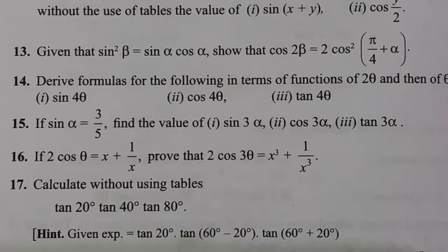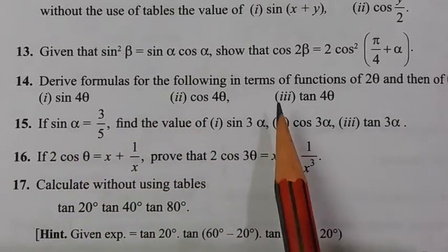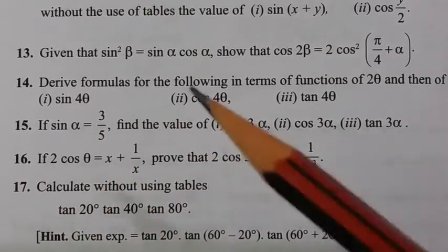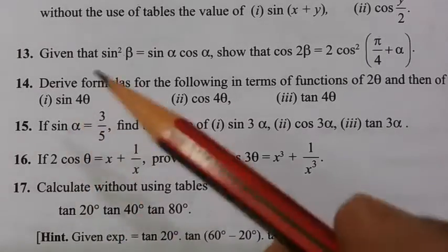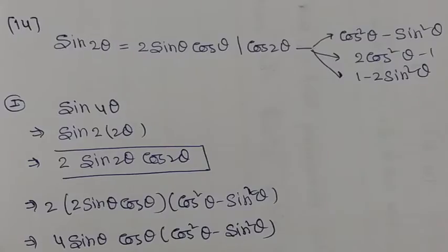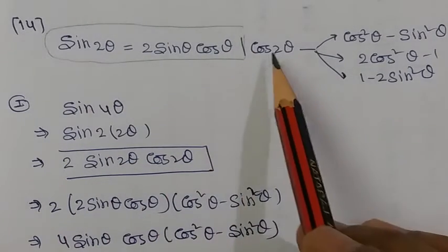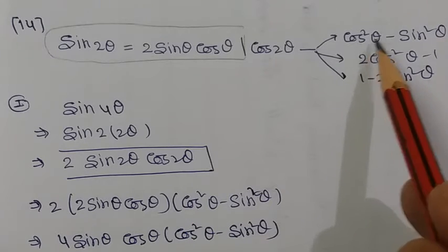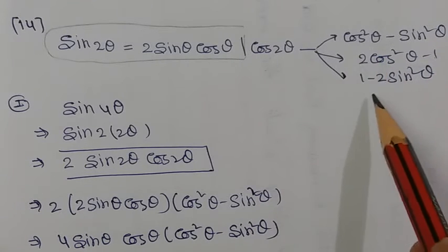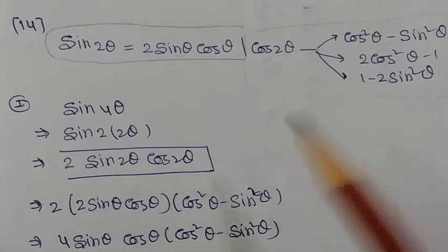Question number 14: Derive formulas for the following in terms of the function of 2θ and then of θ. We need to express sin 4θ and cos 4θ using double angle formulas. We know sin 2θ equals 2 sin θ cos θ, and cos 2θ has three forms: cos²θ − sin²θ, or 2cos²θ − 1, or 1 − 2sin²θ.